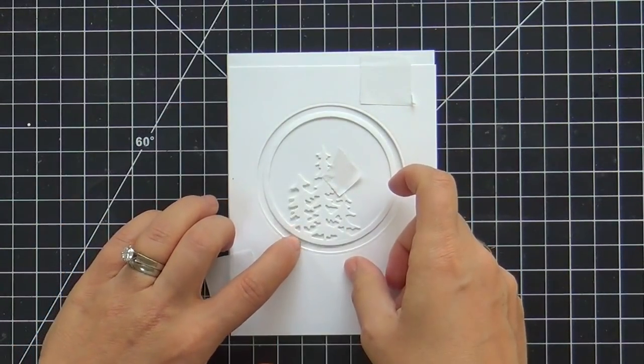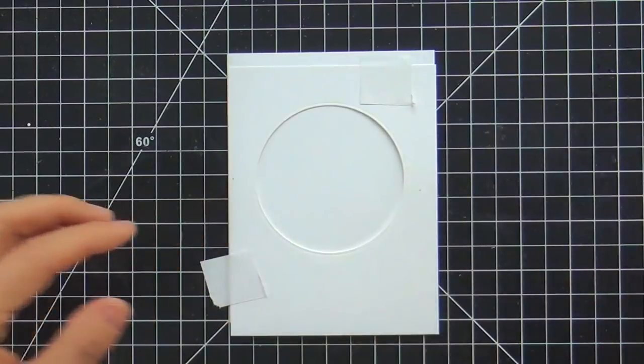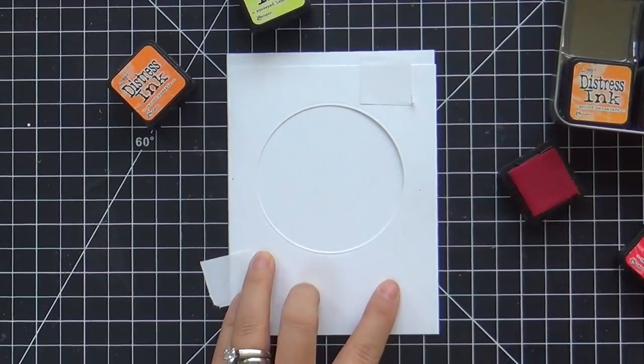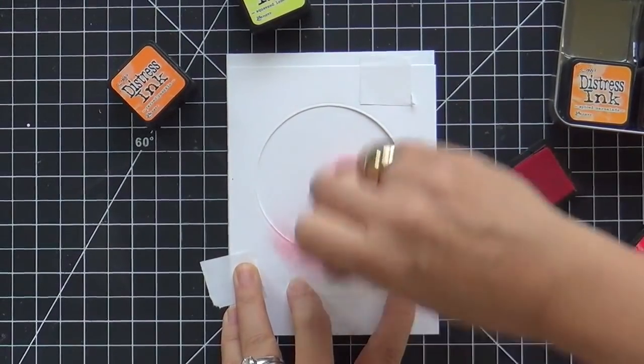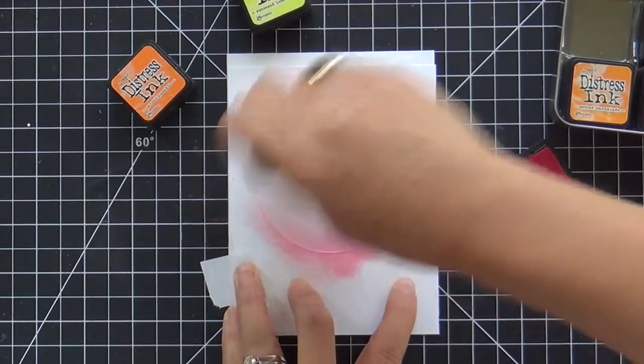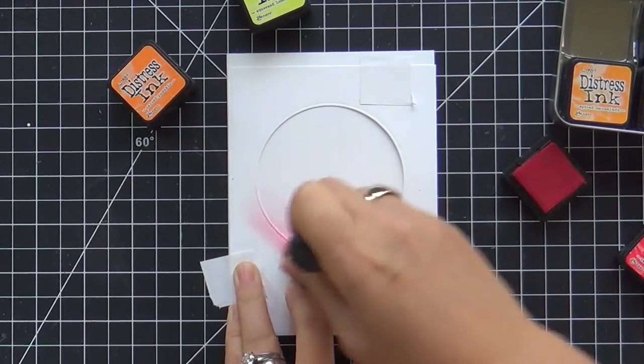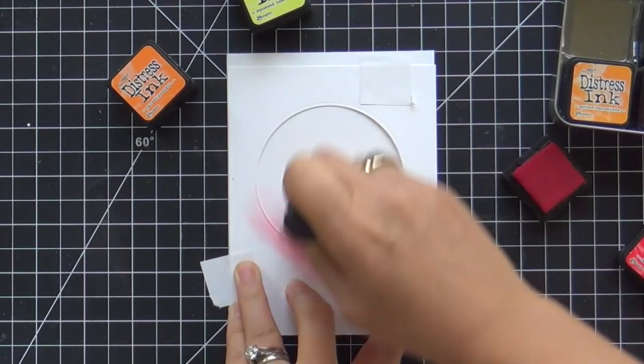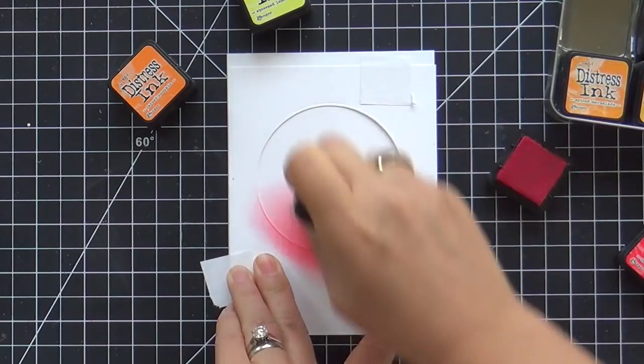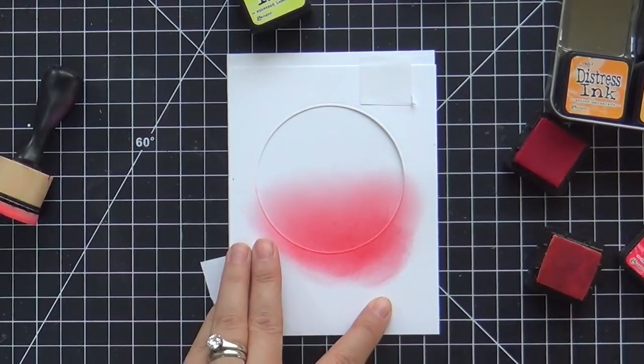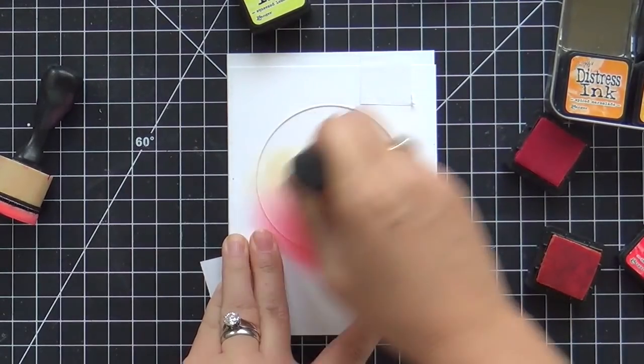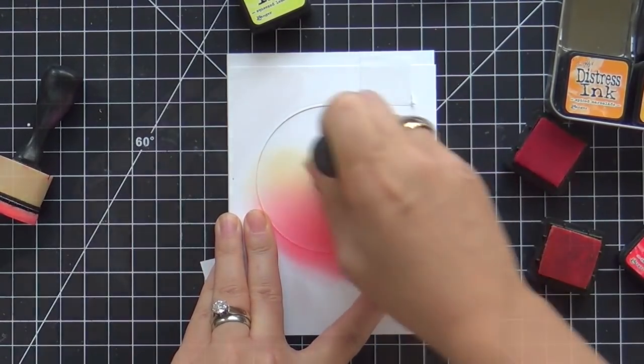So now I'm centering everything on a little panel of Neenah Solar White cardstock. I'm going to get on with the ink blending. So I'm starting with Candied Apple and I just love this. I mean it just never gets old when you ink blend with a mask. You get that sharp crisp edge and it's so clean and simple. You get that vibrant color with the distress inks but you get the crisp white frame.